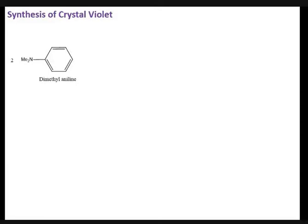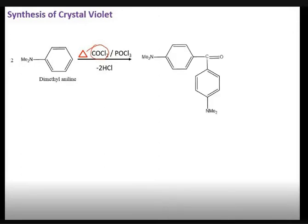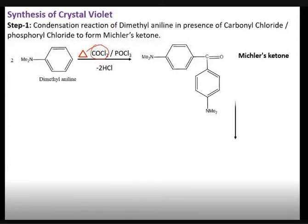So there is dimethylaniline, and we can take the addition of carbonyl chloride in the presence of phosgene — this is also called carbonyl chloride. There is a removal of two moles of HCl, which gives an intermediate that is called Michler's ketone.